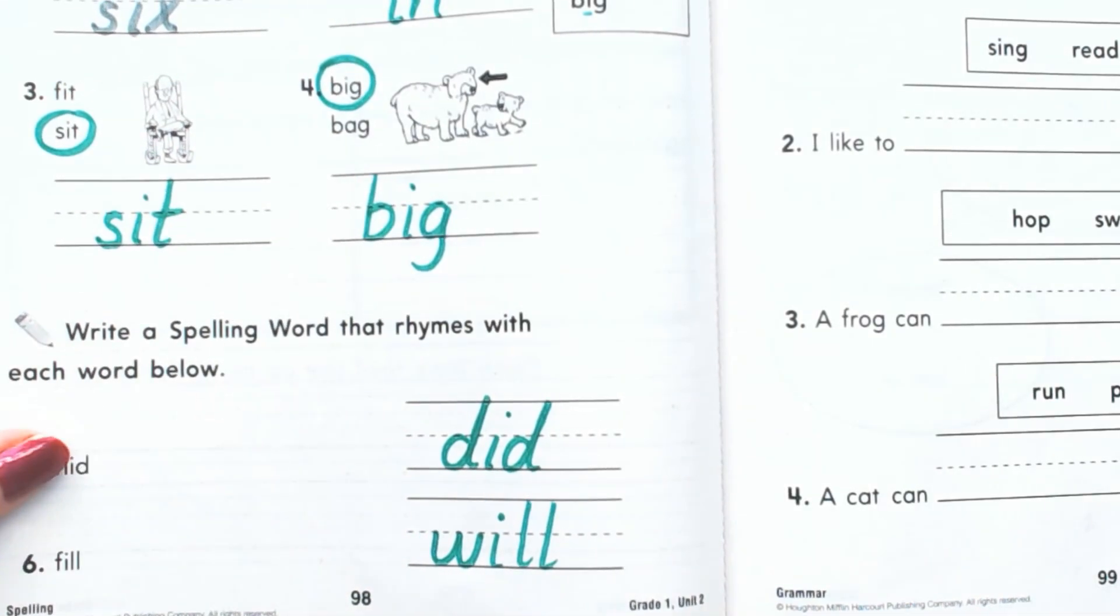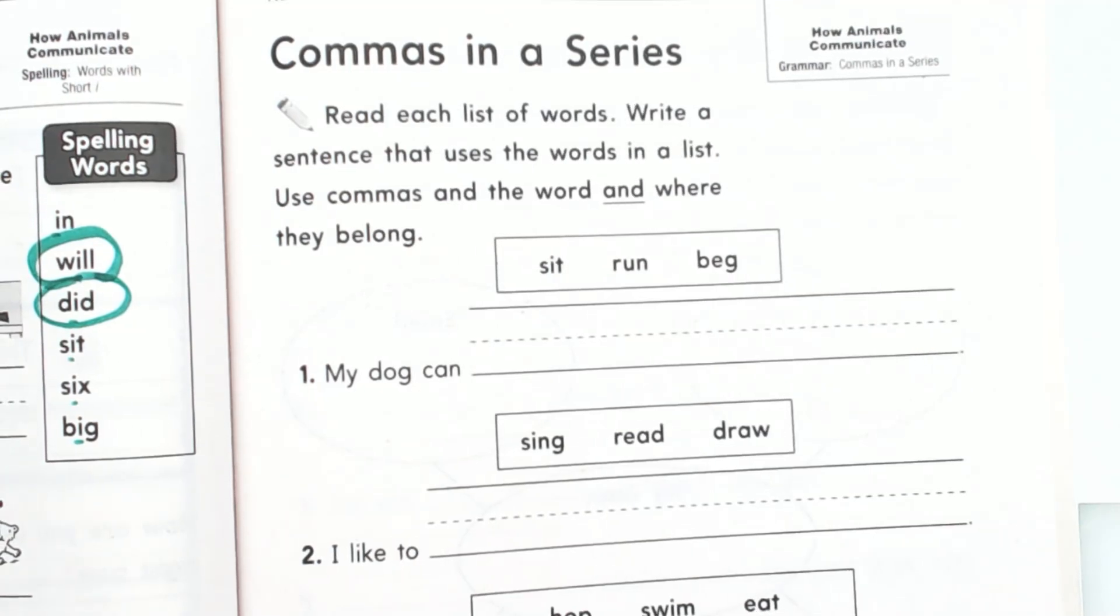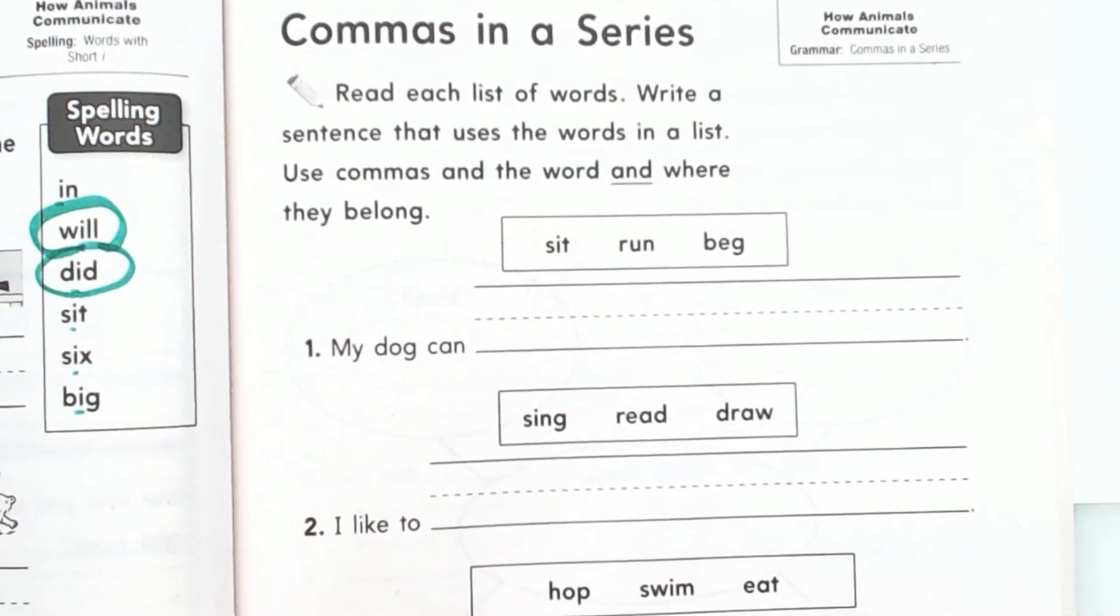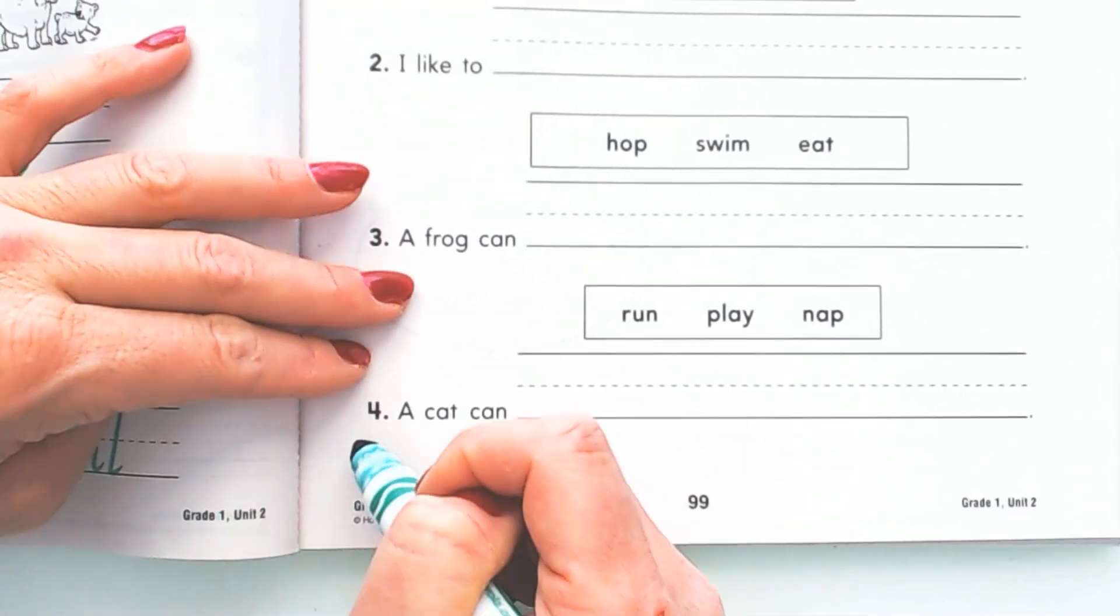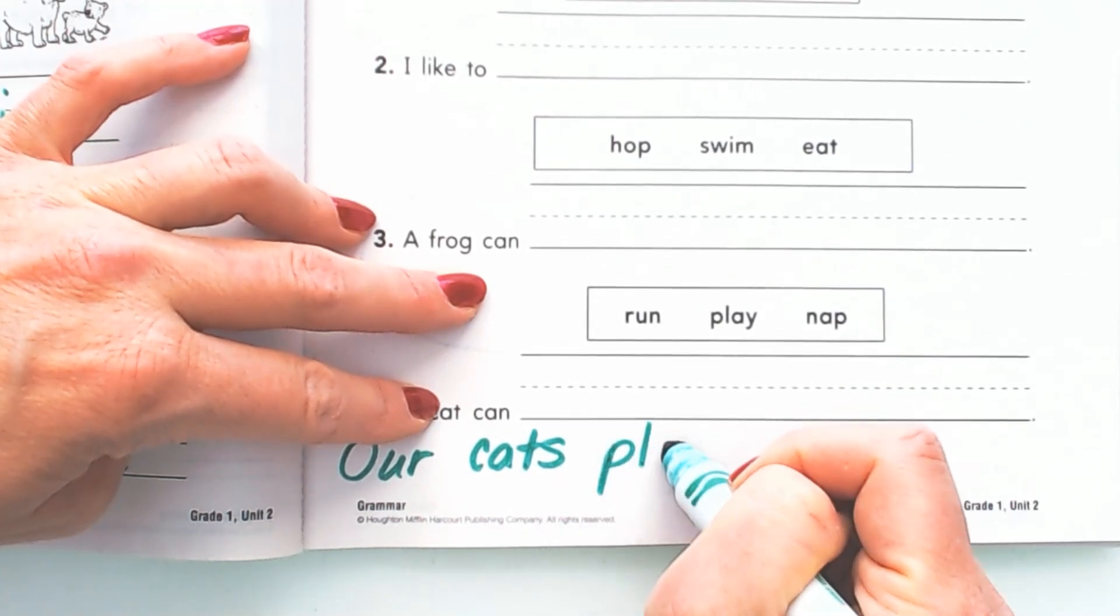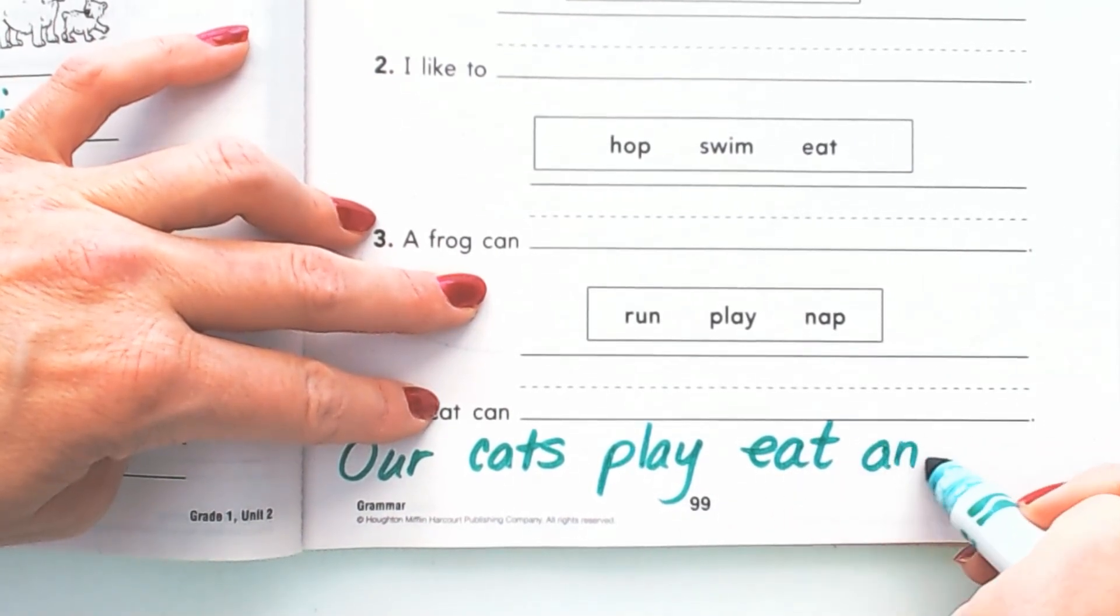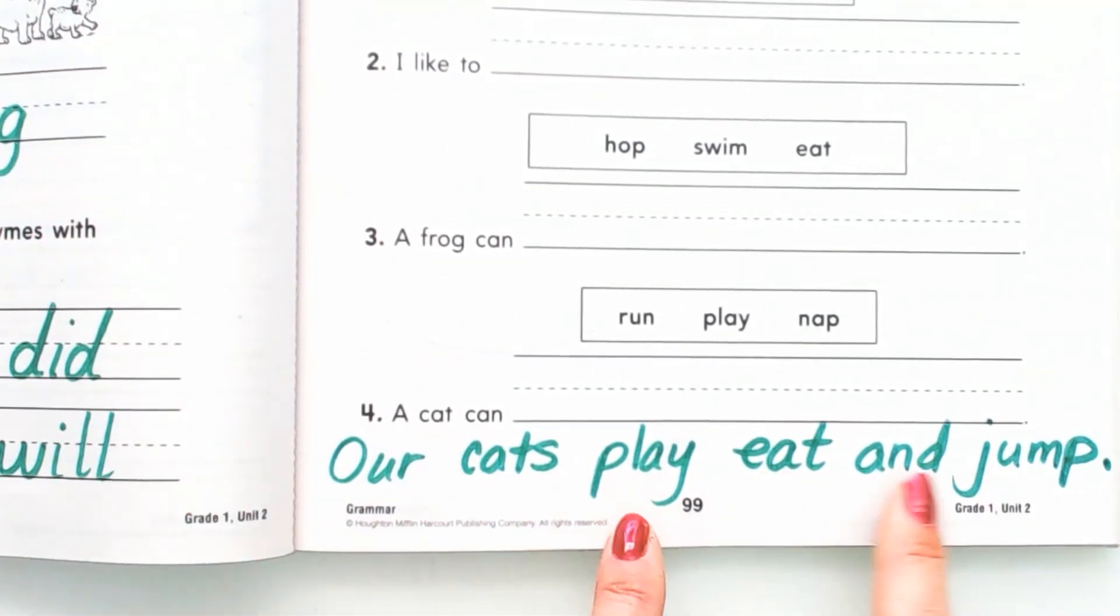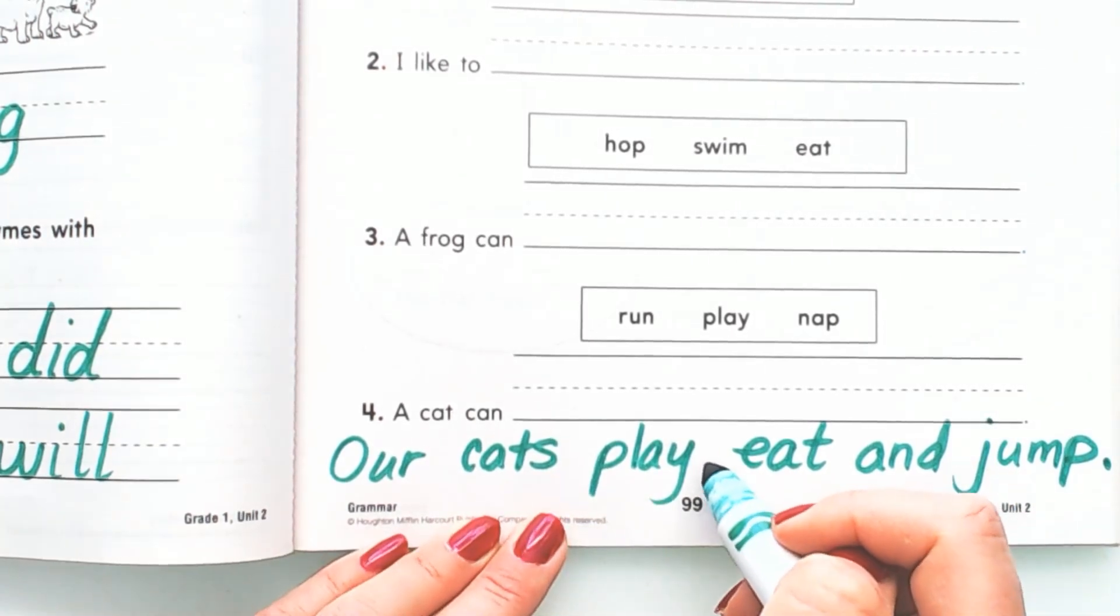So the rule is that if you have three or more words in a list or in a series, then you're going to put commas between them. And an example might be, let me give you an example. Like if I were to say, 'Our cats play, eat, and jump.' Play, eat, and jump are a list of things that they do, a series of things they do, and you have to separate that list with commas.